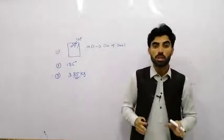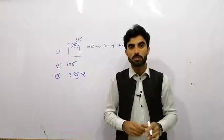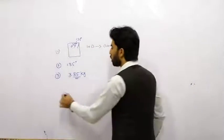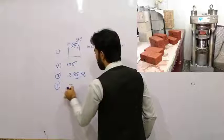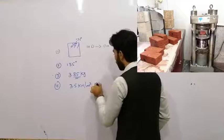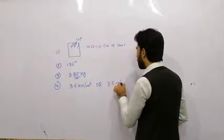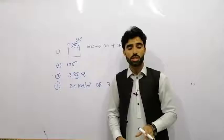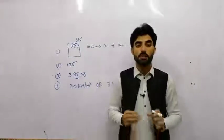The fourth question is: what is the compressive strength of a first class brick? The answer is that the compressive strength of a first class brick is 3.5 kilo Newton per meter square, or equivalently 3.5 Newton per mm square.